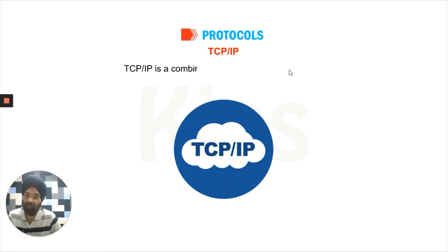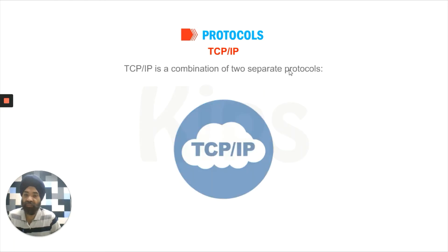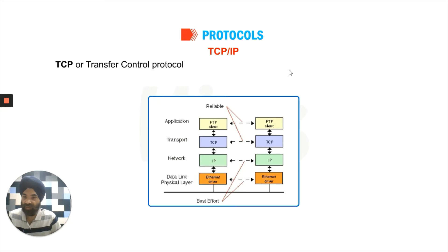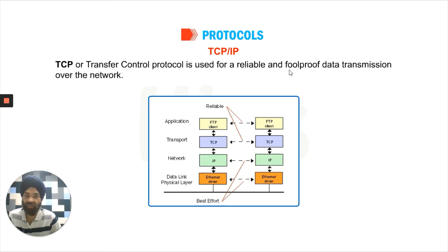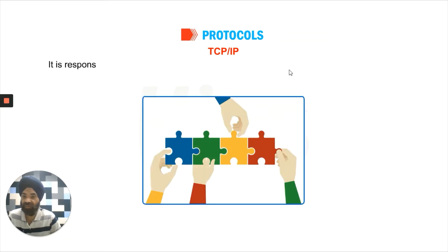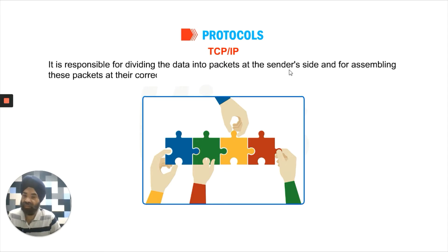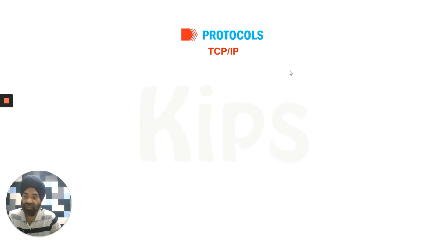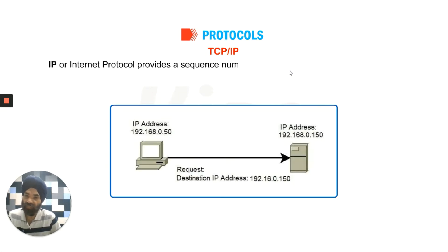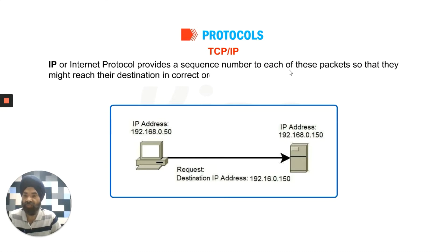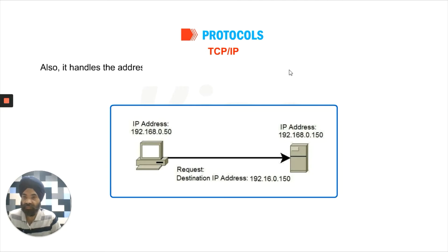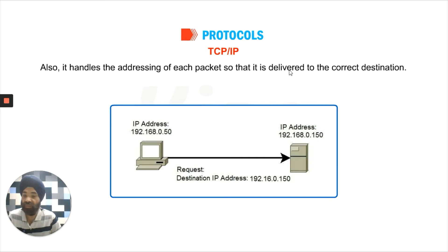TCP/IP is a combination of two separate protocols, TCP and IP. TCP, or Transmission Control Protocol, is used for reliable and full-proof data transmission over the network. It is responsible for dividing the data into packets at the sender side and for assembling these packets at the correct destination. IP, or Internet Protocol, provides a sequence number to each of these packets so that they reach the destination in correct order, and it also handles the addressing of each packet so that it is delivered to the correct destination.